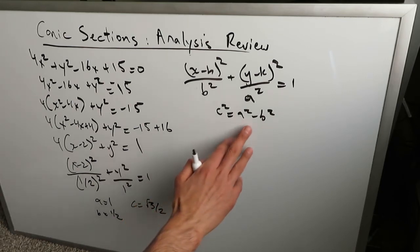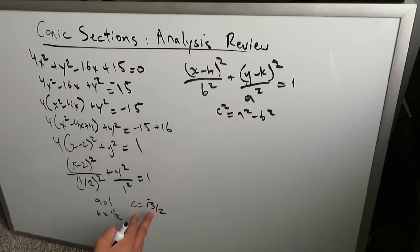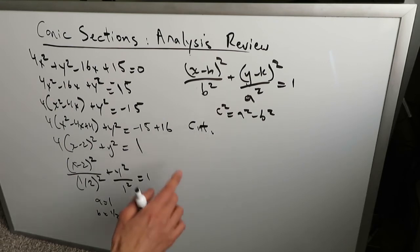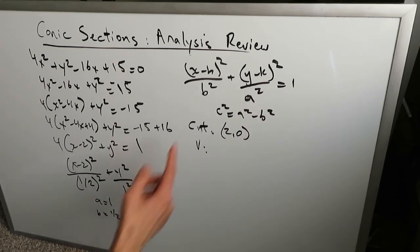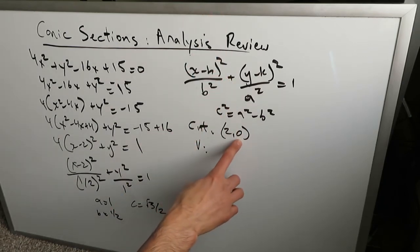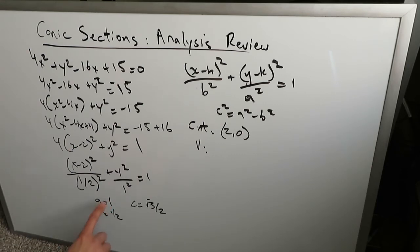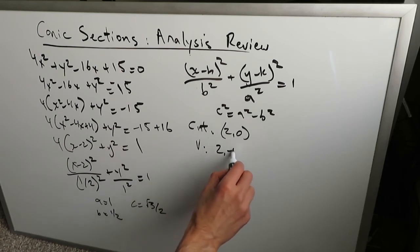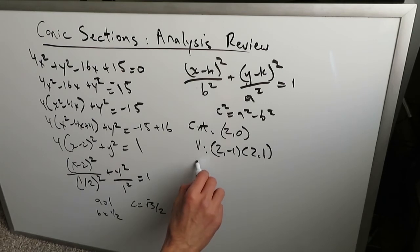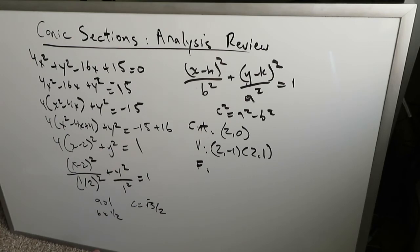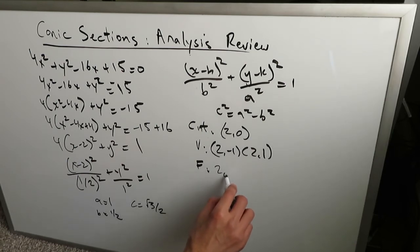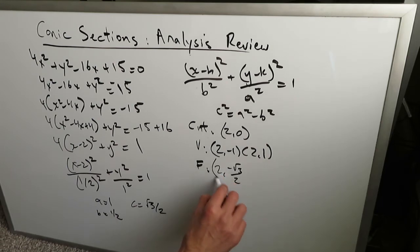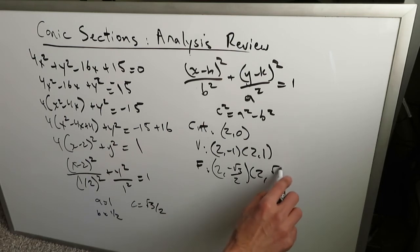Our center is (2, 0). It's a vertically directed ellipse, so everything is in terms of the y-coordinates. Moving one point up and down by a = 1, the vertices are (2, −1) and (2, 1). For the focal points, c = √3/2 and the focal points are located within the center and the vertices. Moving in the vertical direction: (2, −√3/2) and (2, √3/2).